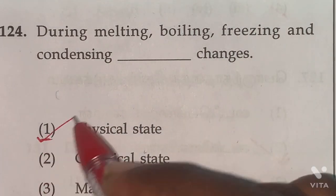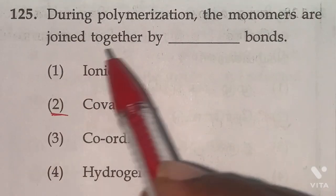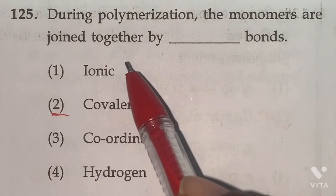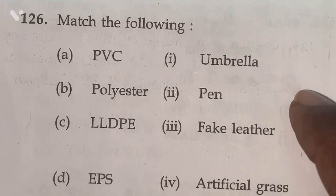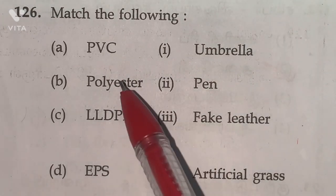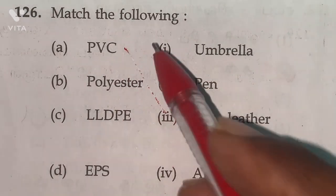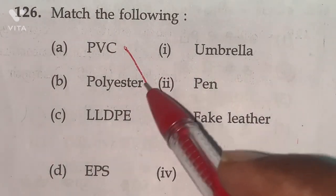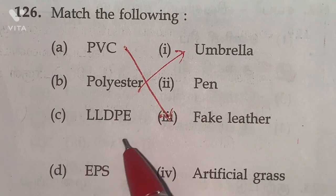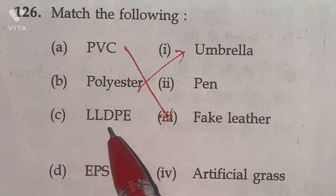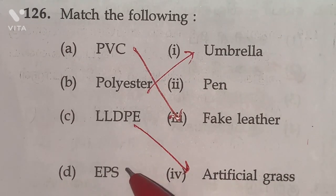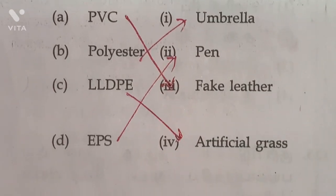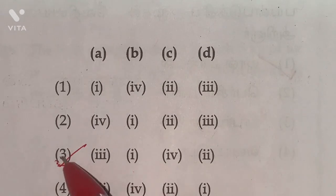125th. During polymerization, the monomers are joined together by covalent bonds. Option 2 is the right answer. 126. Match the following. PVC used as fake leather, polyester used in umbrella, LLDPE that is linear low density polyethylene used as artificial grass, EPS used for pen. EPS nothing but expanded polystyrene. So according to this option, 3rd one is the right answer.